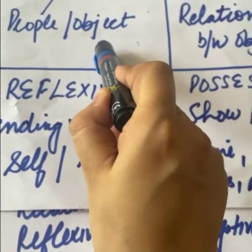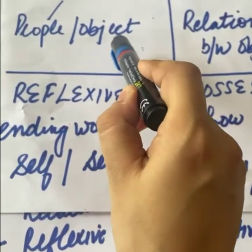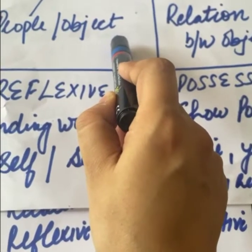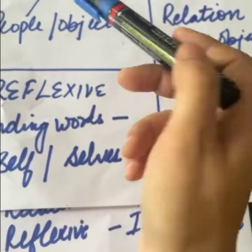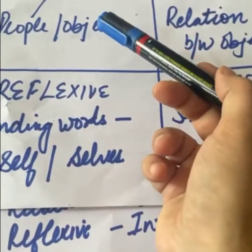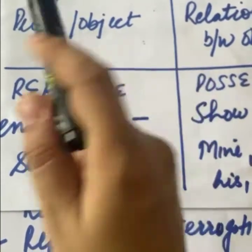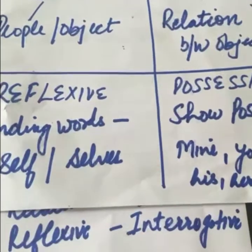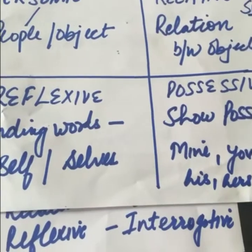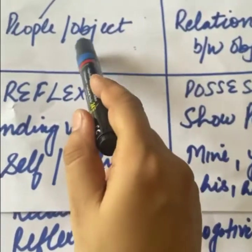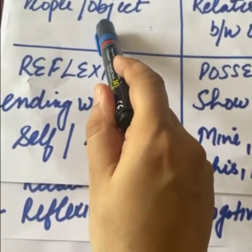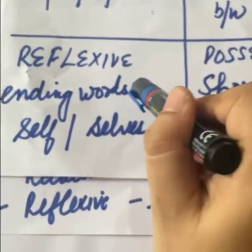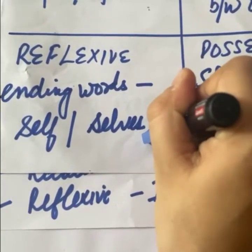Personal pronouns woh hote hain jismein humein people ya objects ke baare mein bataya jata hai — like I, you, he, she. Naam ko change karke hum he, she, it, there lagate hain. Then comes the reflexive pronouns.